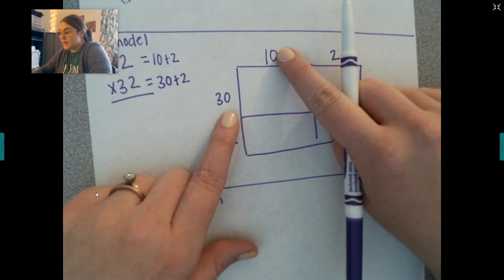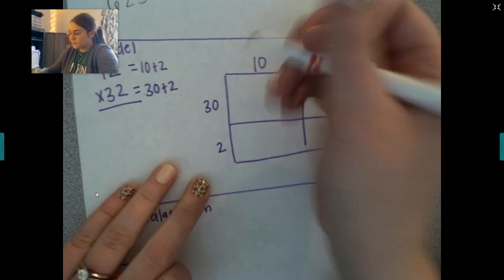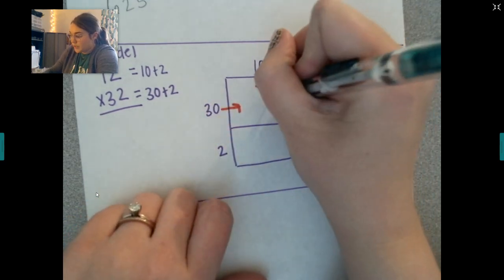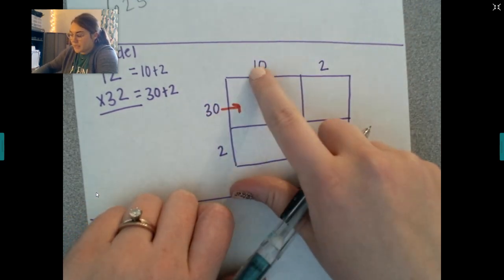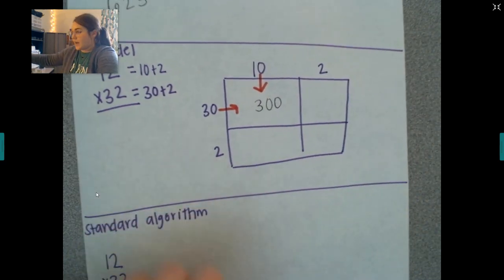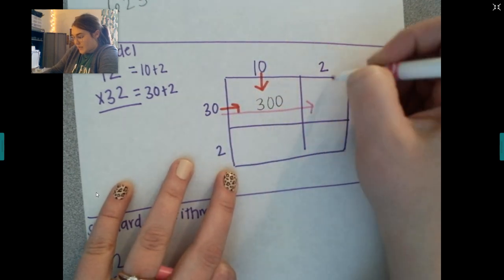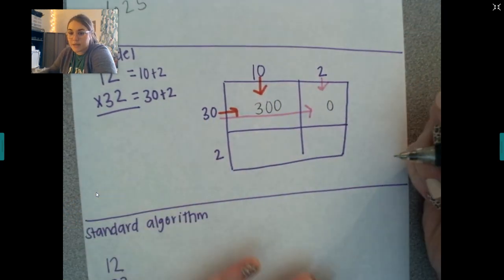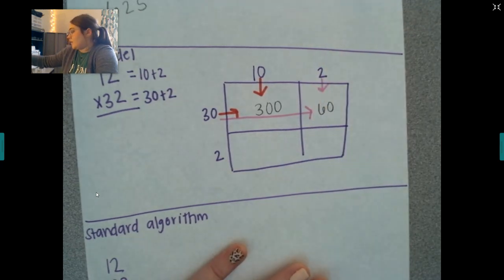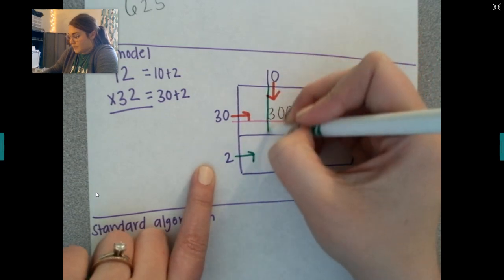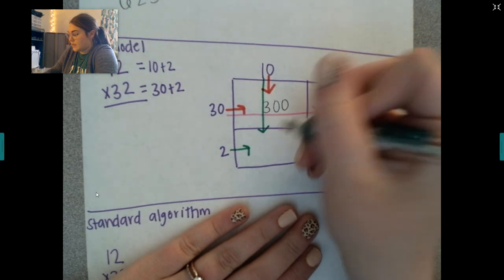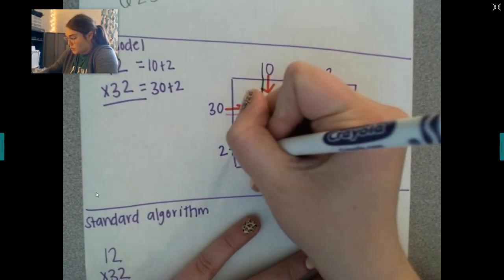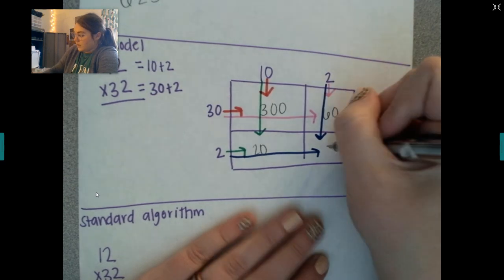So now let's multiply. So in this box, we are going to multiply our 30 and our 10. So 30 times 10. Well, you have to do your two zeros first and then you'll multiply 3 times 1 which is 3. 300. Now we're going to multiply our 30 times our 2. Again, you write your 0 first. You do 3 times 2 and what's 3 times 2? 6. All right, and now it's time to do our next number. 2 times 10 and what's 2 times 10? 20. And last but certainly not least, we're going to do the last box which is 2 times 2. And what's 2 times 2? 4.